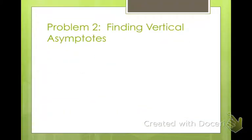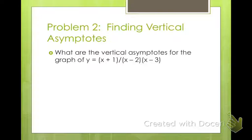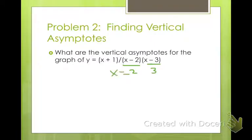Finding vertical asymptotes. For y equals (x+1) divided by (x-2)(x-3), the points of discontinuity are anything that makes the denominator 0 — so x equals 2 and x equals 3. Are they removable or non-removable? If they are non-removable, then they are vertical asymptotes. So our vertical asymptotes are x equals 2 and x equals 3.